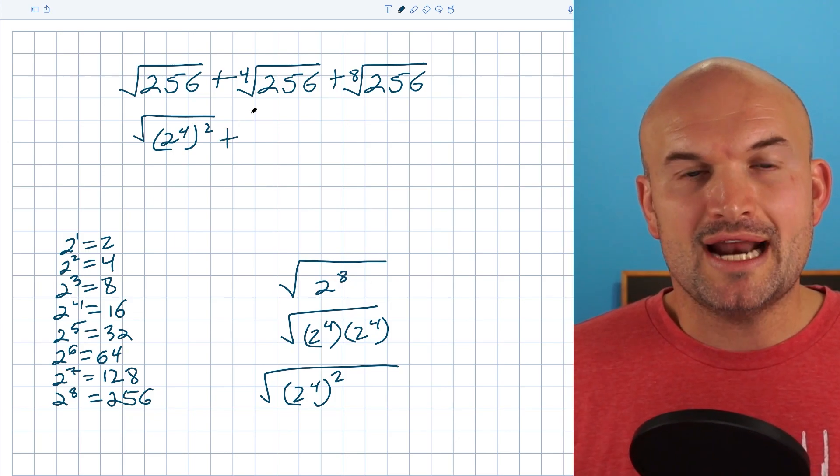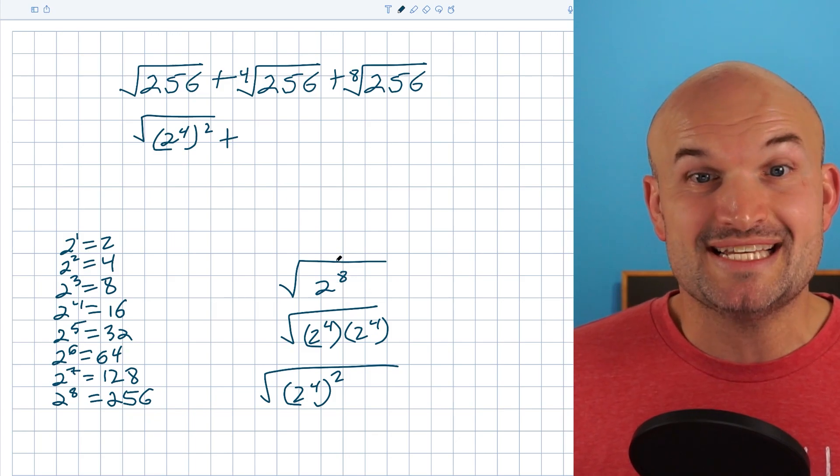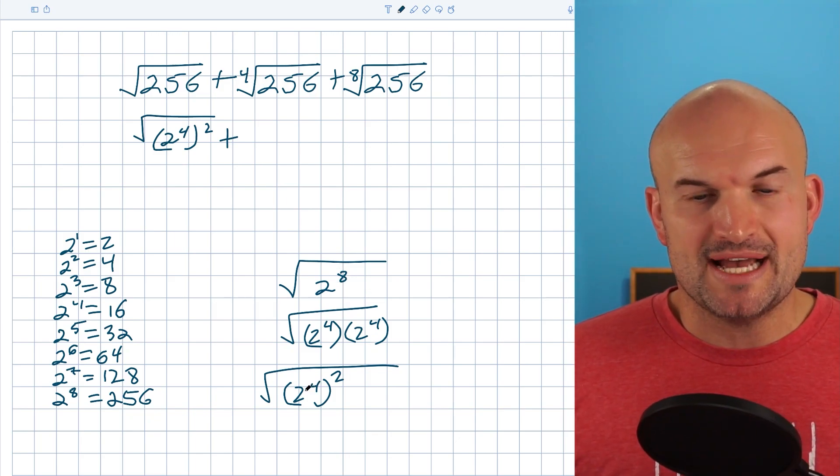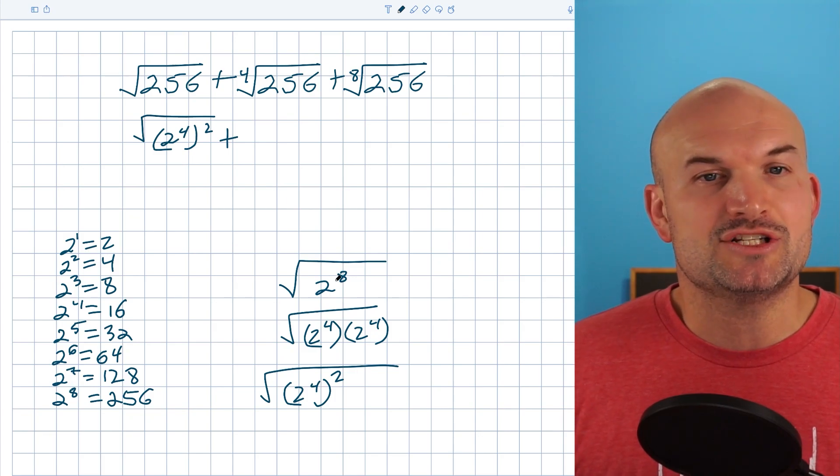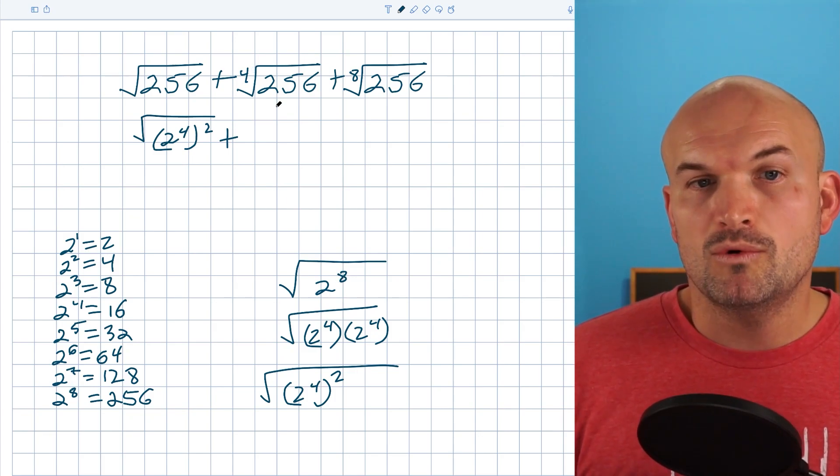In our next example, how can I rewrite that two to the eighth raised to the fourth power? Here, we split it up as two to the fourth squared, but how can I rewrite two to the eighth being raised to the fourth power? Well, in this case, all we simply need to do is if I take the fourth root,